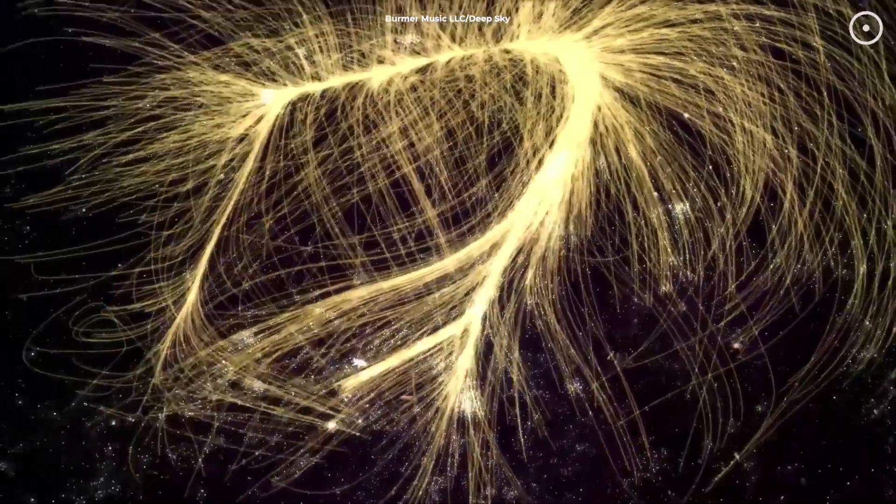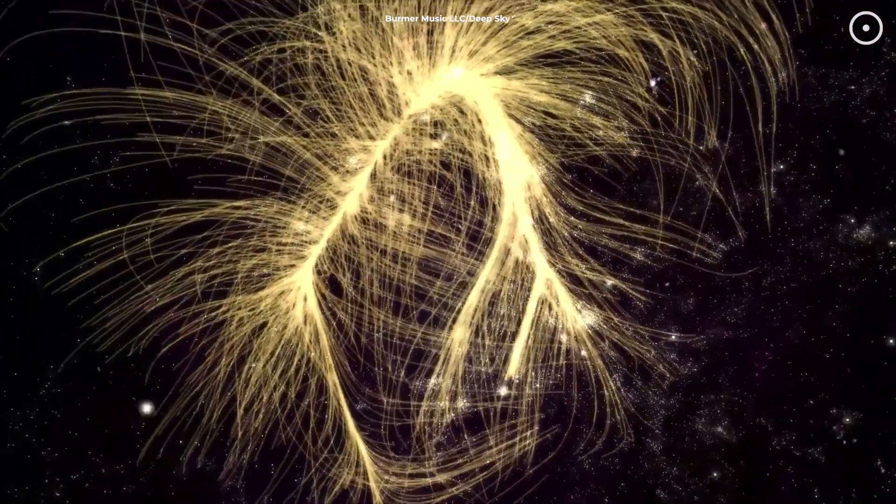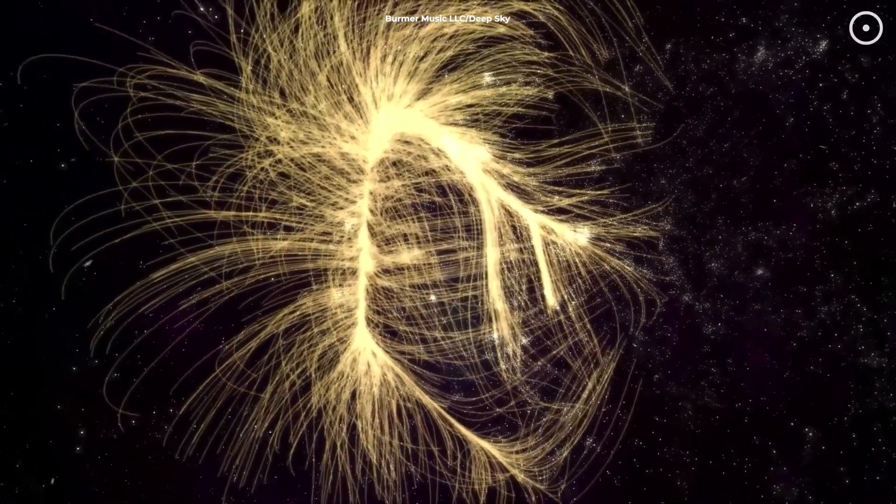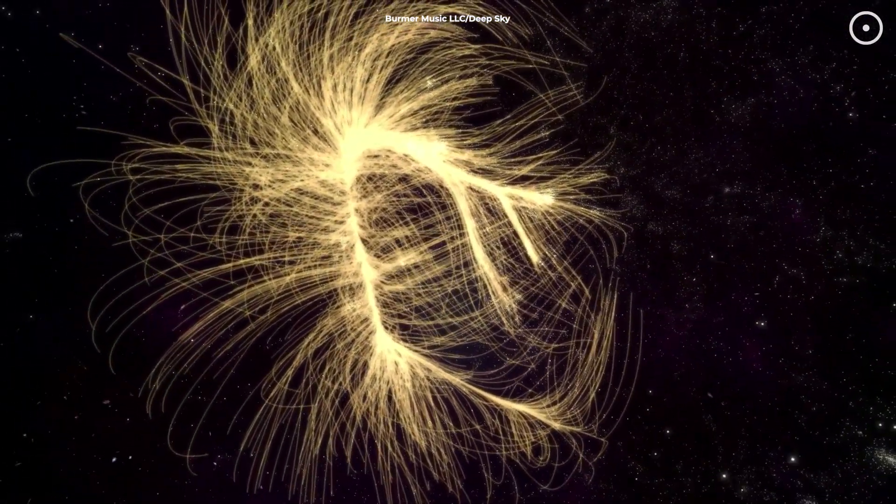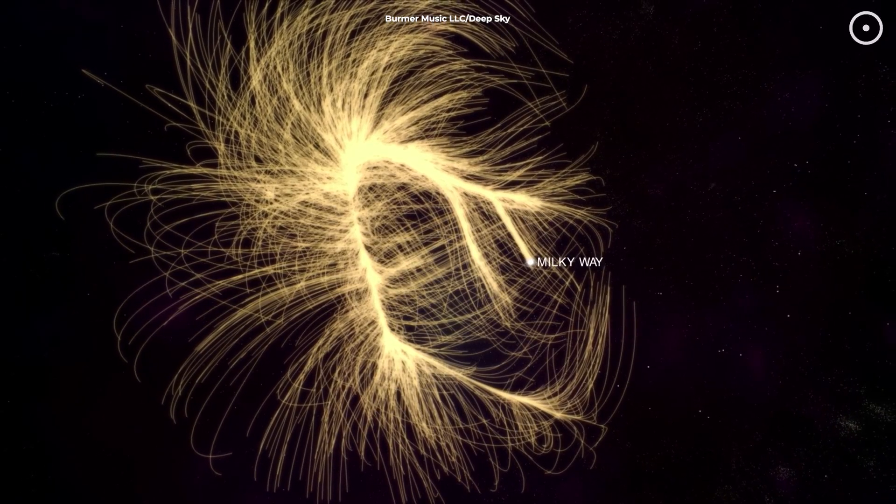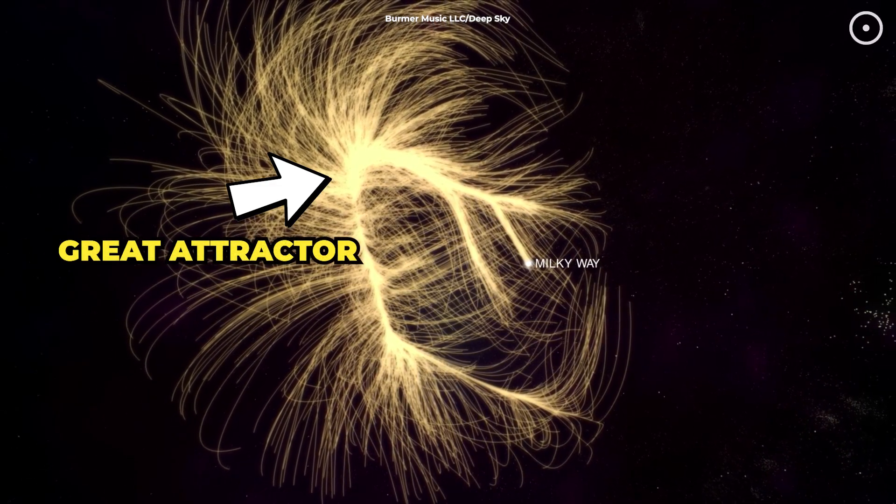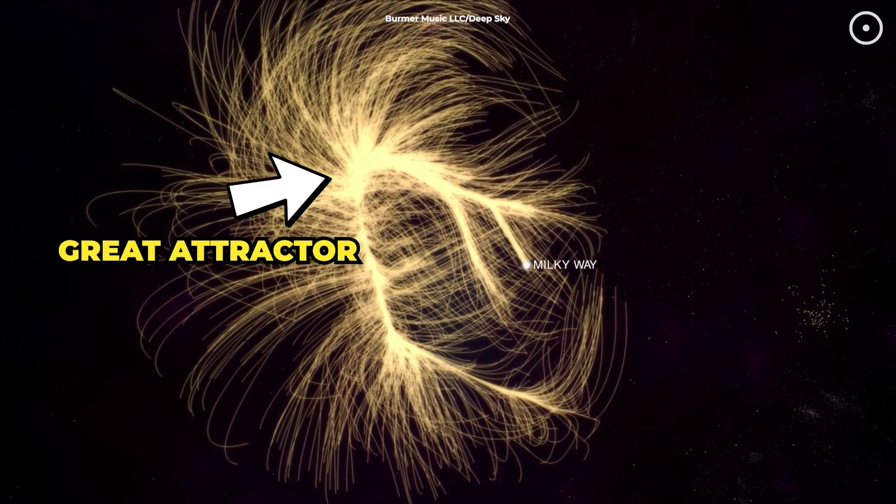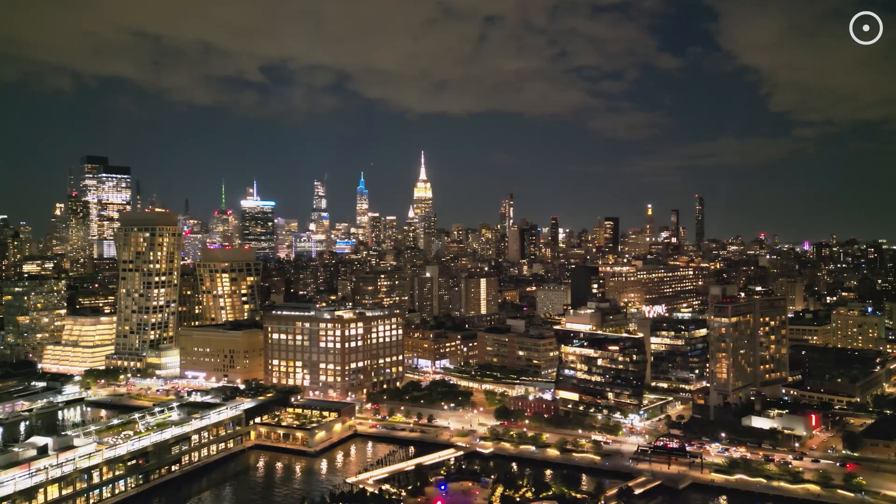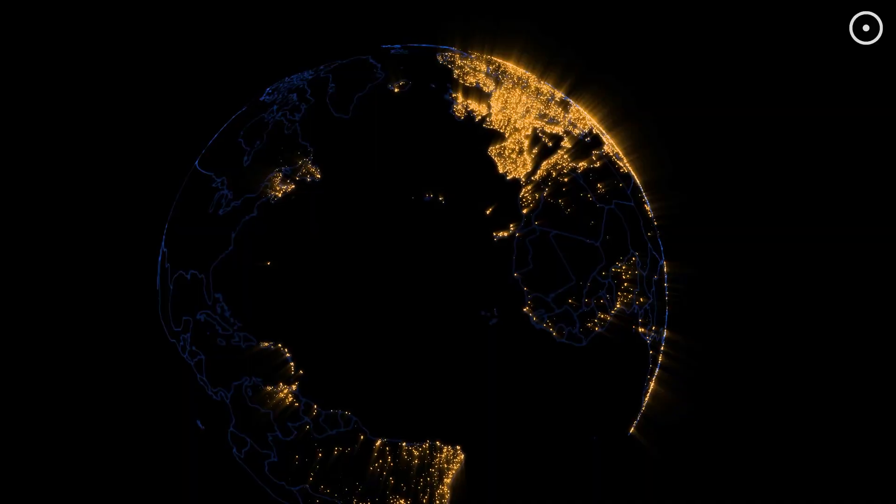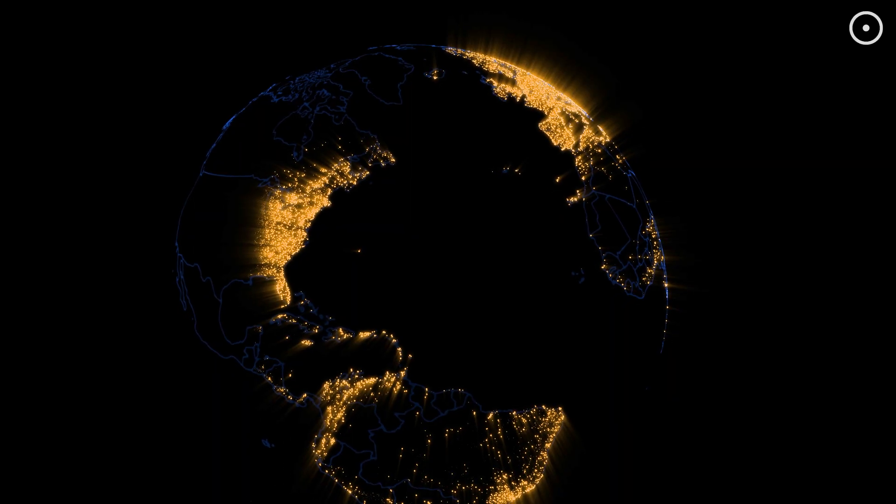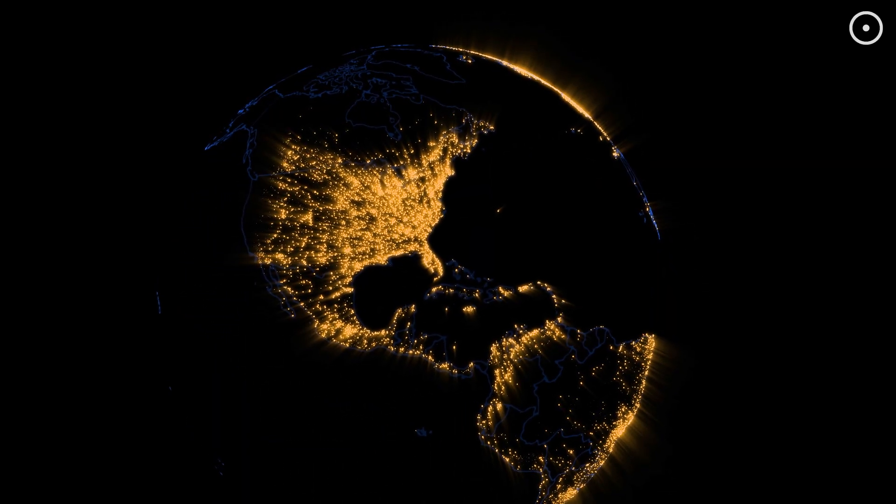But here's where it gets interesting. All these galaxies aren't just floating around randomly. They're flowing together like water in a giant cosmic watershed, all moving towards something known as the Great Attractor. Let me put this in perspective. If the Milky Way was New York City, Laniakea would be like having every city on Earth combined into one mega-metropolis.